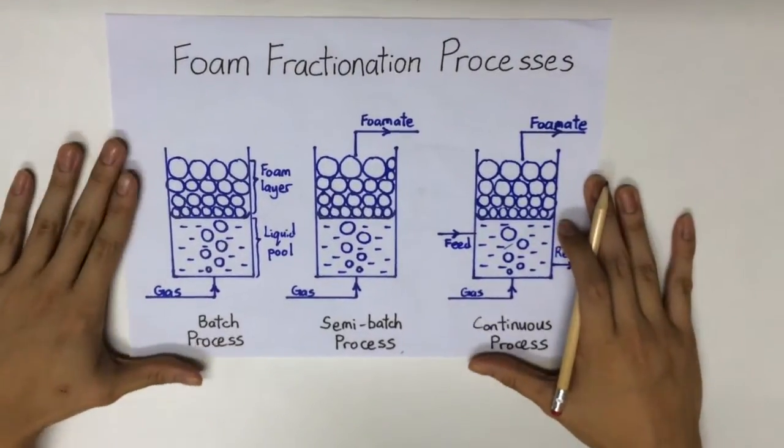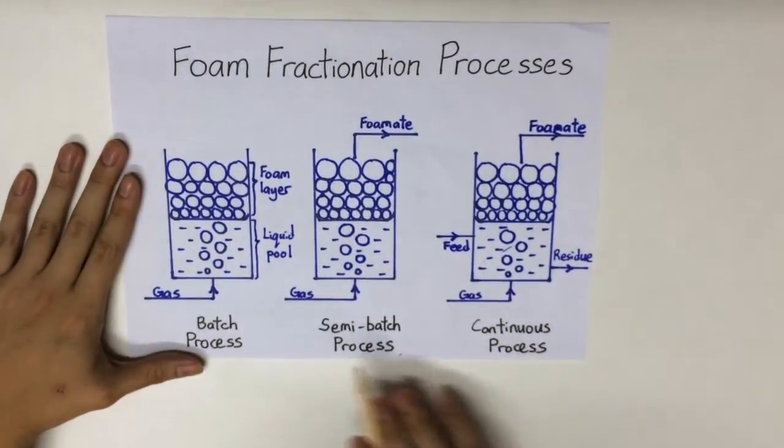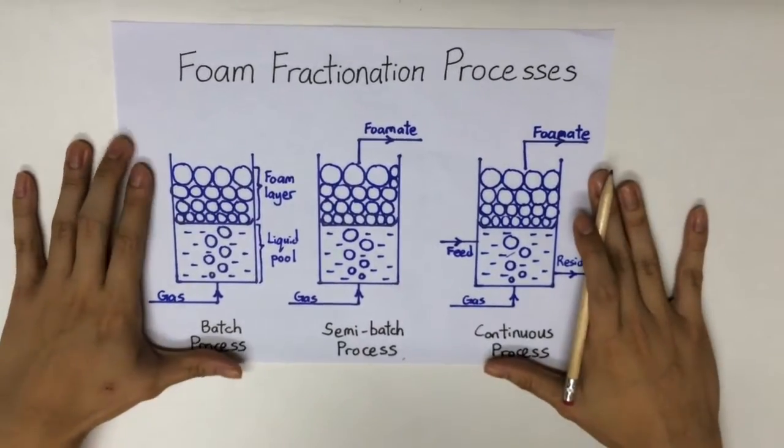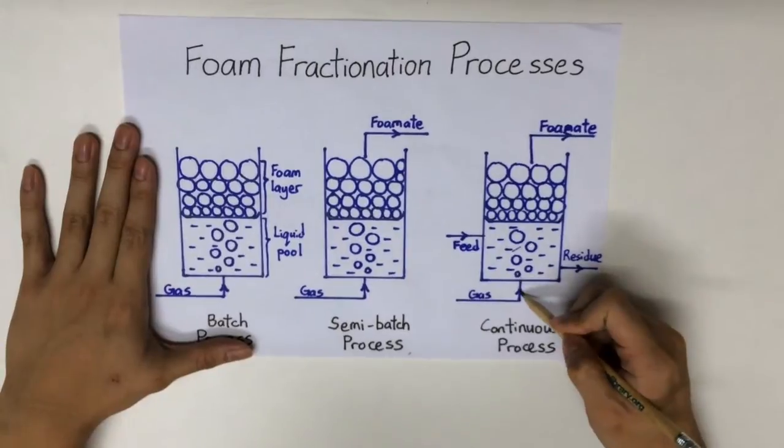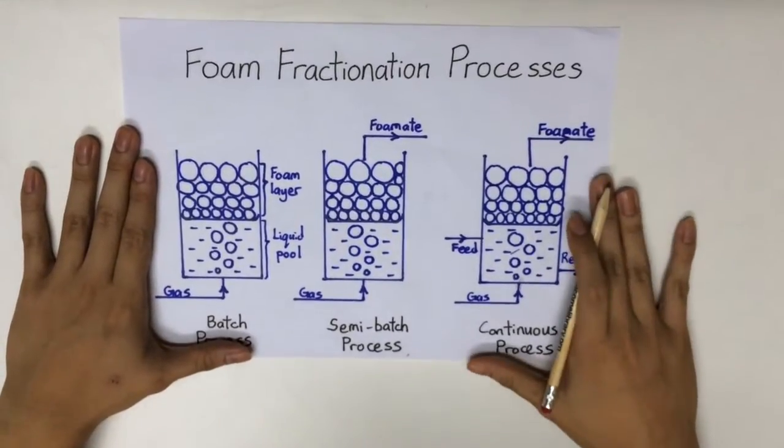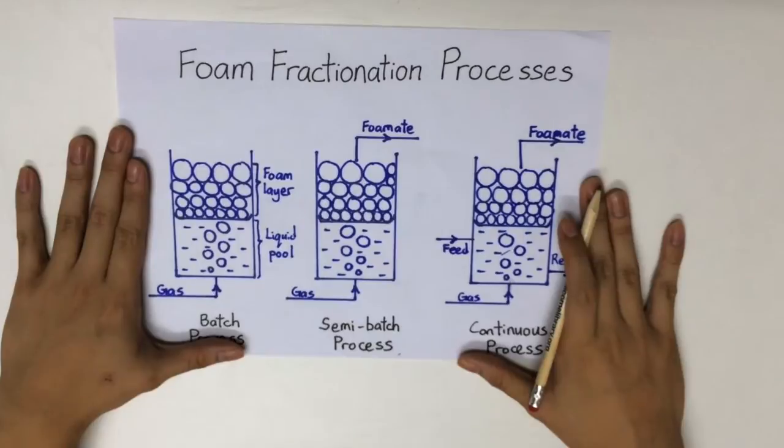Foam fractionation consists of three types of process: batch, semi-batch, and continuous process. The process undergoes absorption between the solid and bubbles generated by the gas spraying through a liquid solution. The absorption process is on gas liquid interface.